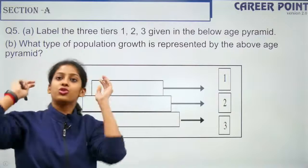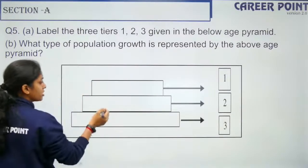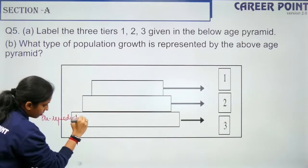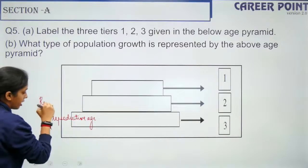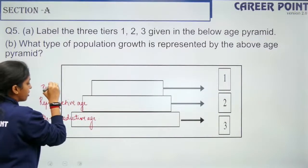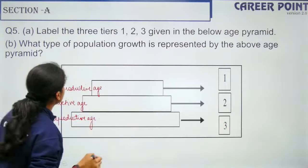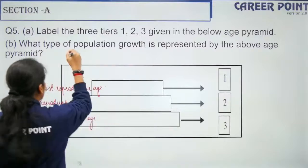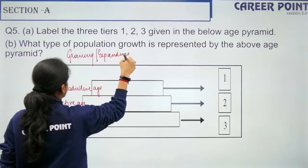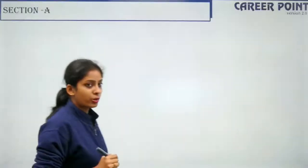Question 5: Label the age pyramid diagram. This comes from Organisms and Populations. The bottom tier is the pre-reproductive age, the middle is the reproductive age, and the top is the post-reproductive age. The type of population growth represented is a growing or expanding population. Please go through diagrams carefully — they can appear in your question paper exactly like this.